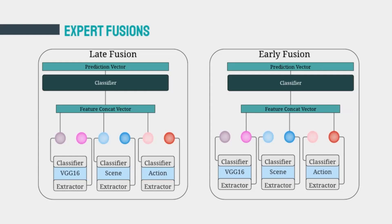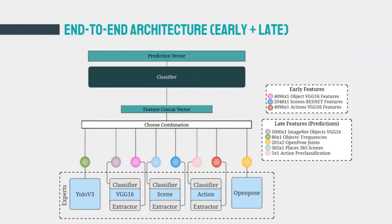In fact, we use both. At the input level we have five semantic experts, each outputting a set of features helpful for the overall human activity classification task. The features map shows the type and size of every expert's output. We then choose a combination of the expert outputs to be concatenated and passed to the rest of the pipeline, experimenting with all combinations to analyze the effect of semantic fusion of early and late features on overall accuracy.